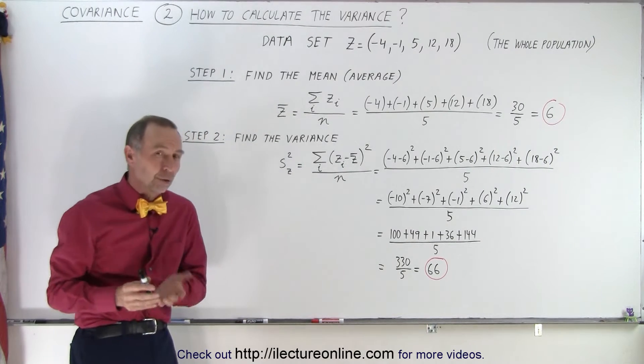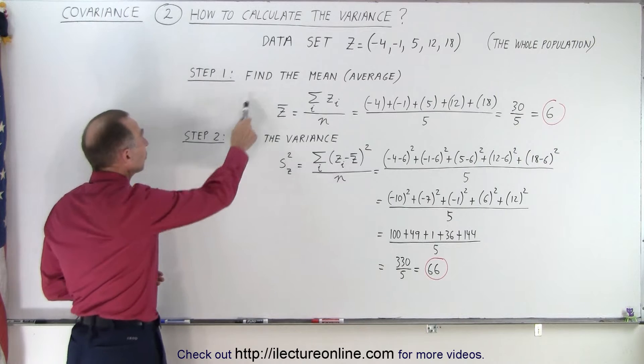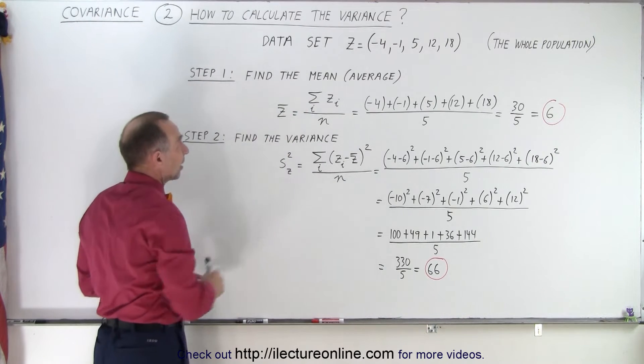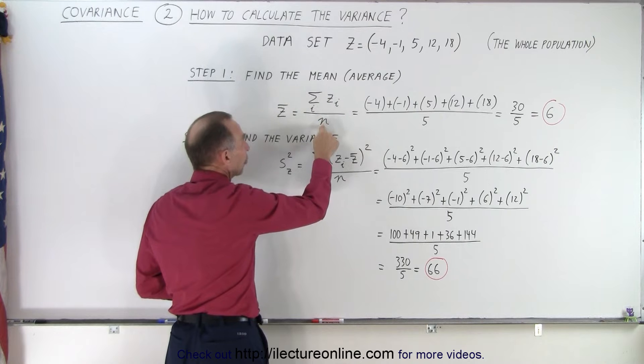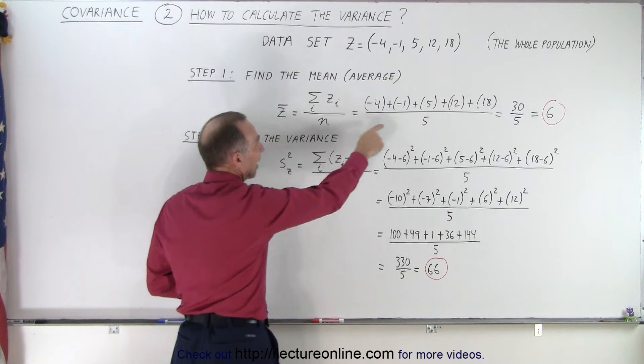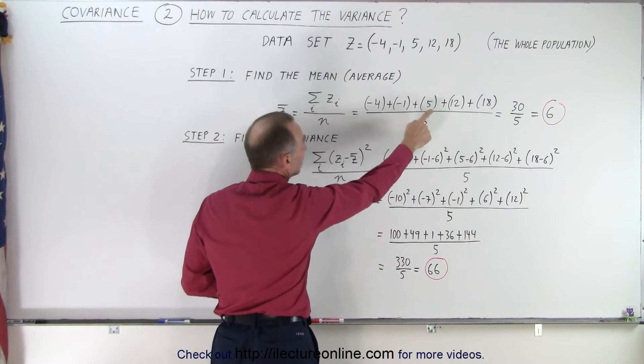There are two steps to follow. First, we need to find the mean or the average of our data set. How do we do that? We add up all the numbers and divide by the total number of numbers that we have. There are five numbers and we add them up.